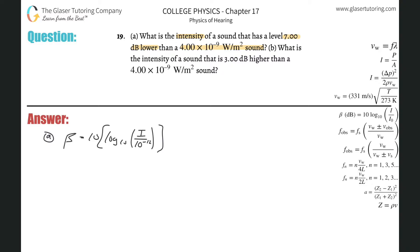So if I want to find the decibel level of a 4 times 10 to the minus 9 sound, all I got to do is plug it in. So this is going to be beta equals 10 multiplied by the log base 10 of 4 times 10 to the minus 9 all divided by 10 to the minus 12. And voila, just plug it on in.